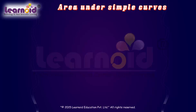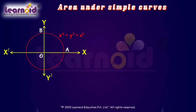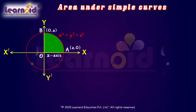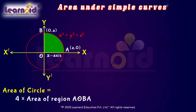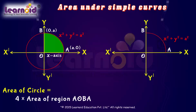Using these methods, let us find the area enclosed by the circle x² + y² = a². Because the circle is symmetric in all four quadrants, we will find the area in the first quadrant and then multiply it by four. The area of the circle equals four times the area of region AOBA. Let us find the area of region AOBA bounded by the curve, x = 0, x = a, and the x-axis. Let us consider a very thin vertical strip inside the circle of height y and width dx.